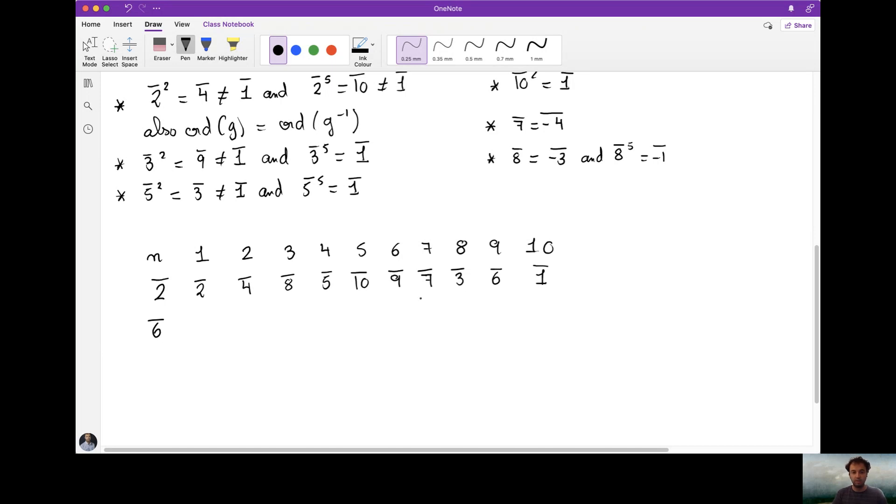So you notice here that we have all elements of the group, 1, 2, 3, 4, 5, 6, 7, 8, 9, and 10, so indeed 2 is a generator of the group. 6 is the inverse element of 2, so we will have exactly the same sequence, but just read in the opposite direction. It starts at 6 here, and then you will just have the same direction. So here you will have 3, 7, 9, 10, 5, 8, 4, 2, and 1.